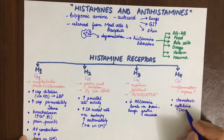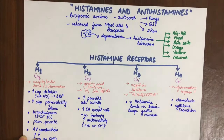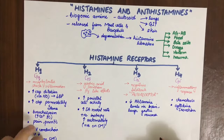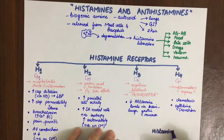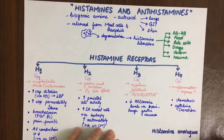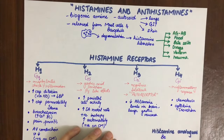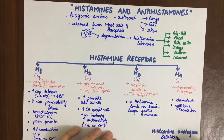Histamine analogues such as betahistine can be used in vertigo of Meniere's disease. This will be discussed in more detail at the end of this video.